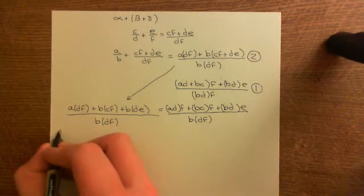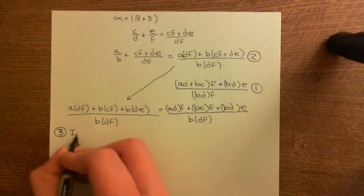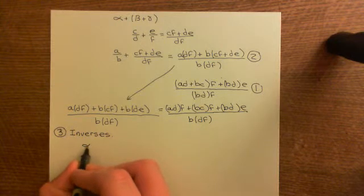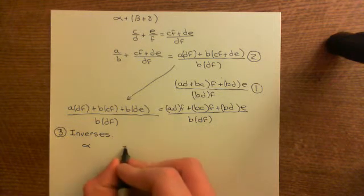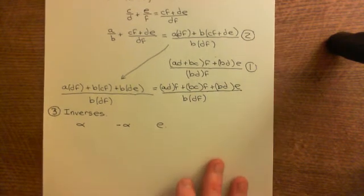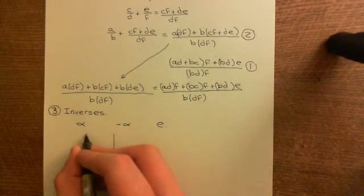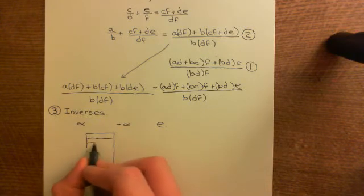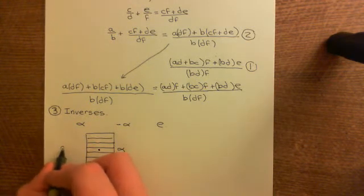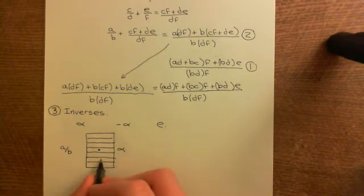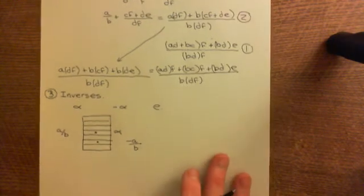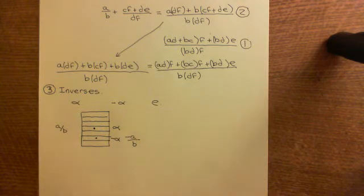Next we need to show inverses — the third property. We need to show that for all alpha, there is another equivalence class, negative alpha, which adds to alpha to give the identity equivalence class. For any equivalence class alpha with representative a over b, there must be another equivalence class containing negative a over b, where negative a is the additive inverse of a in the original domain, and we'll call this equivalence class negative alpha.